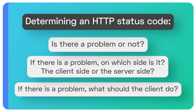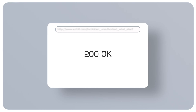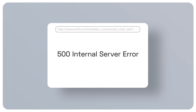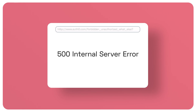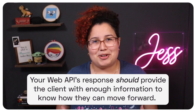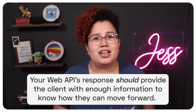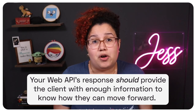For example, if the client receives a 200 OK, it knows that there is no problem with the request. On the other hand, if the client receives a 500 internal server error, it knows that the problem is on the server side and there is nothing the client can do to fix it. In summary, your web API's response should provide the client with enough information to know how it can move forward.